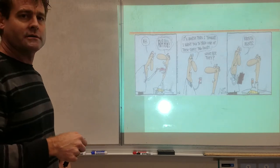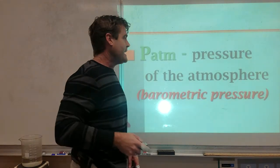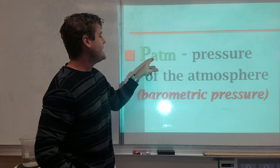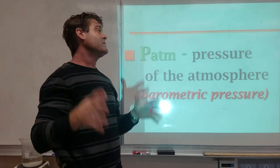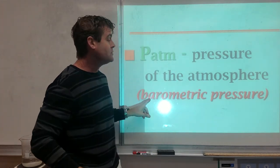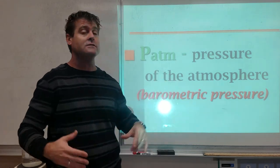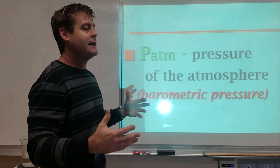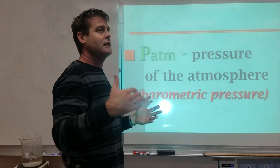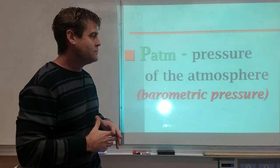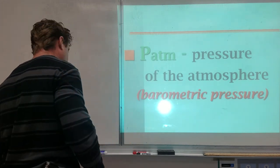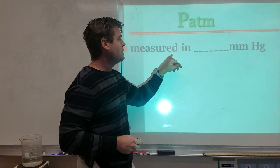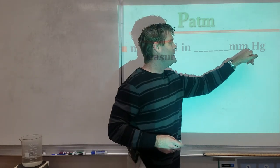When we write P atm, the big P refers to pressure and atm is an abbreviation for atmosphere — the atmosphere exerts a pressure we call atmospheric or barometric pressure. Barometric pressure is even used to predict weather patterns; lower pressure typically indicates a storm is coming, while higher pressure indicates fair weather. We often measure atmospheric pressure in millimeters of mercury — which seems odd since millimeters is a unit of length.